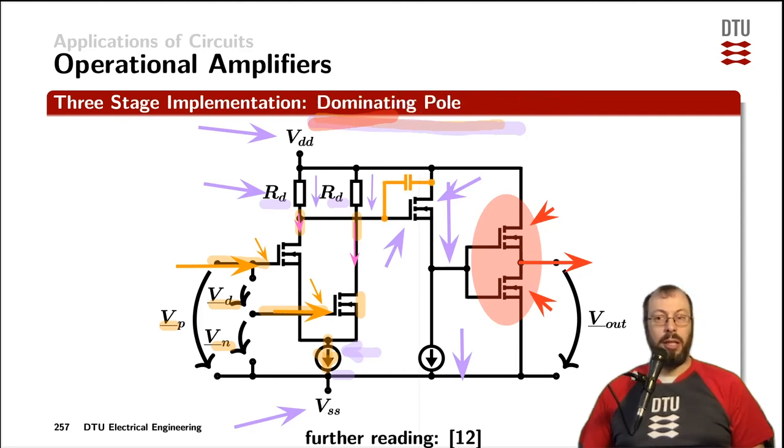Now the dominating parasitic in an amplifier limiting its usage in terms of frequency and not maintaining the ideal conditions for any frequency towards infinity is the so-called dominating pole represented by the capacitor here. Before we have a look into where that capacitor is coming from,